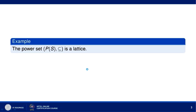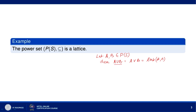Now let us see an example of a lattice. The power set P(S) with the inclusion relation is a lattice. Let A and B belong to P(S), the power set of a set S. Then A union B is equal to the join of A and B, because join of A and B means least upper bound of A and B. We can see that A is a subset of A union B, and B is a subset of A union B, so A union B is an upper bound of A and B.